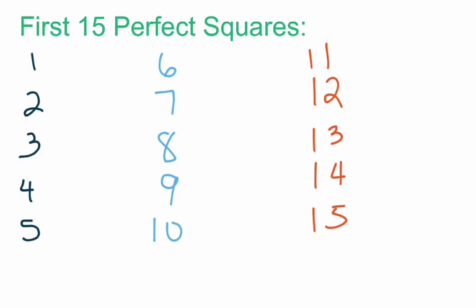Now in order to be successful in this lesson, there's some memorization we're going to have to do. First, we're going to have to memorize the first 15 perfect squares. I have the first 15 integers written down here, and we have to memorize the square of each of these numbers and be able to recall those squares quickly. When we square a number, that means we multiply it by itself.